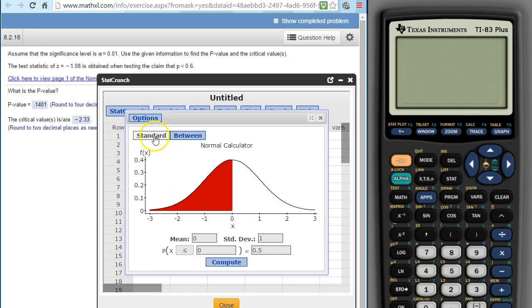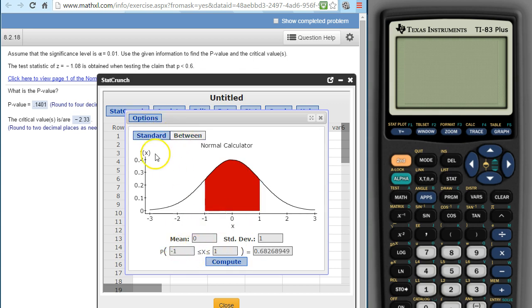All right, and then depending on the sign for your claim, you're either going to use less than, greater than, or not equal to. If it's not equal to, you've got to do it between. And then you have to split that alpha value up in half.